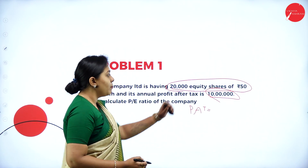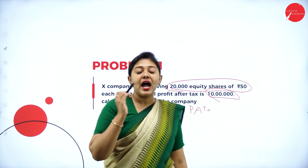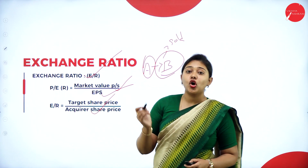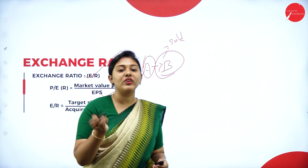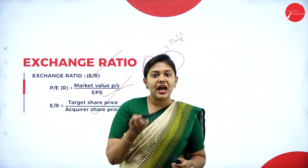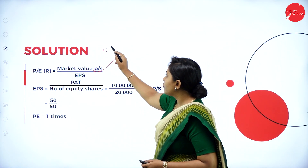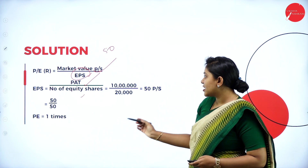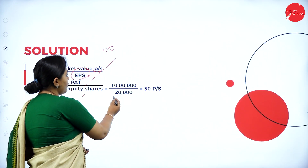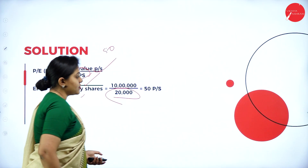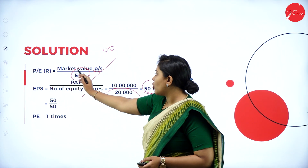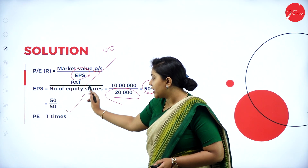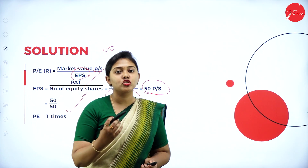In the question, market price is given and the total number of equity shares are given, but EPS is not given. So we need to calculate the earning per share first, then substitute into the formula. Market price is 50 rupees. To calculate EPS: profit after tax (10 lakh) divided by number of shares (20,000) gives us EPS. Substituting the values into the PE ratio formula, the answer is 1 times. Price-to-earning ratio is expressed in times.